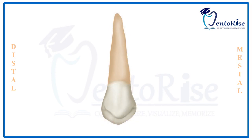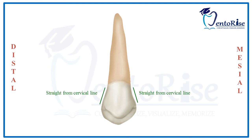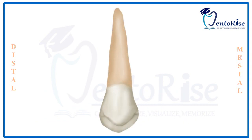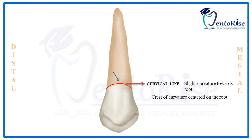Regarding the mesial and distal outlines of the lingual cusp: starting from the cervical line and moving occlusally, both outlines are straight from the cervical line, then turn convex, and then become continuous with the mesial and distal slopes of the lingual cusp. The cervical line on the lingual aspect has a slight curvature toward the root, with the crest of curvature centered on the root. The root is smooth and convex at all points, and the apex from the lingual aspect is blunt.